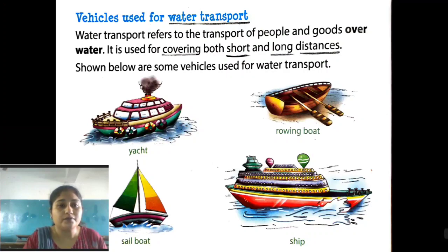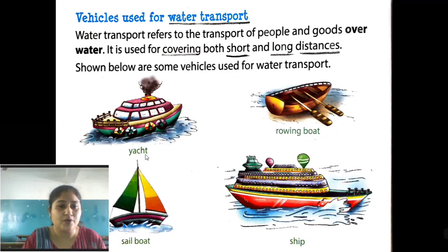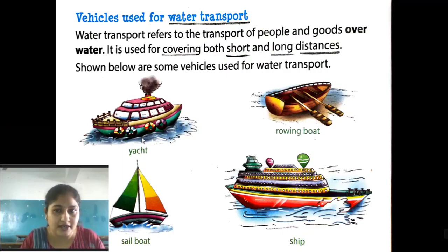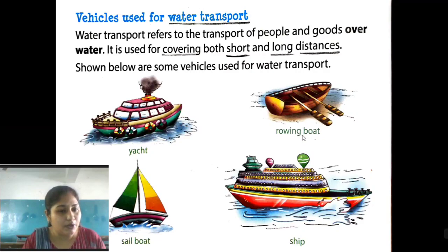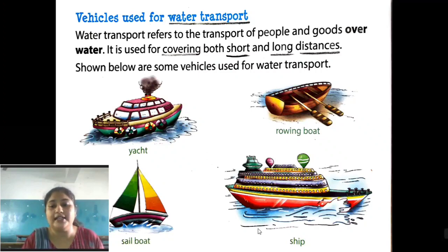Shown below are some vehicles used for water transport. This is a yacht — it is ship-like but a bit smaller than a ship. This is a rowing boat — R-O-W-I-N-G — used by normal people and those who go fishing. And this one is a sail boat — S-A-I-L B-O-A-T. And this is a ship.